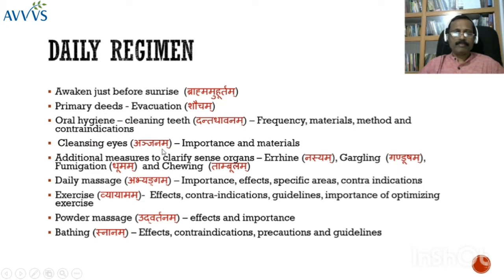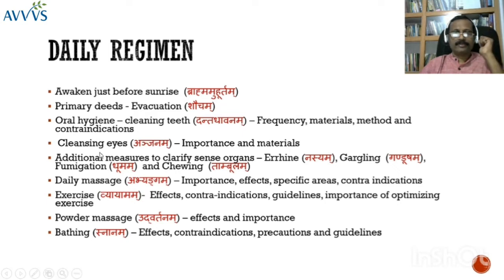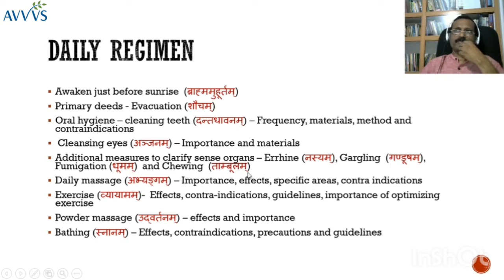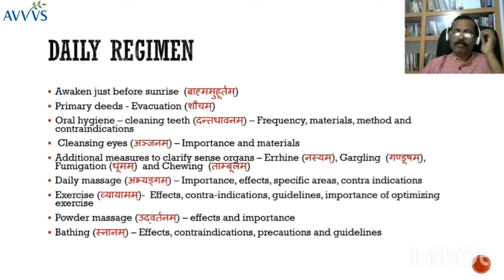Then we move on to Anjana — the application of medicine for cleansing the eyes, applied to the eyelids and eyelashes, which makes your eyes clean and clear. Additional measures exist to clarify all the sense organs, because sense organs are very important in daily life. Specific practices include Nasyam — application of medicine on the nose — Gandusham (gargling), fumigation, and Thambula Charvana (chewing). These practices make your sense organs clean and clear, with effects reaching the brain as well.